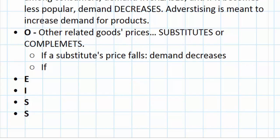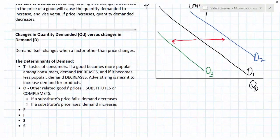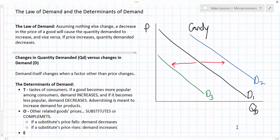If a substitute's price rises — for example, if I like Butterfingers and Mars Bars and Mars Bars get more expensive — what happens to my demand for Butterfingers? Well, clearly if the substitute is now more expensive, I'll demand more. So an increase in the price of a substitute would cause a shift from D1 to D2, and a decrease in the price of a substitute would cause a shift from D1 to D3.